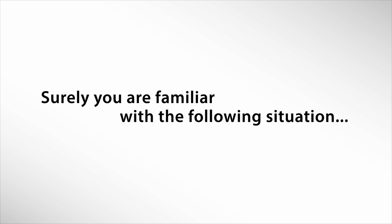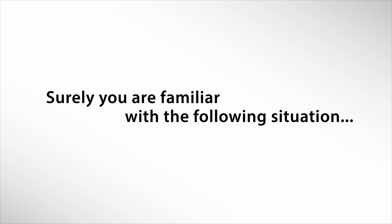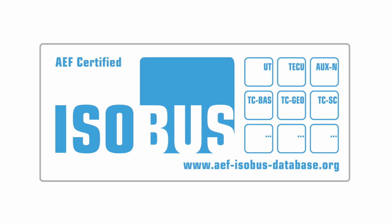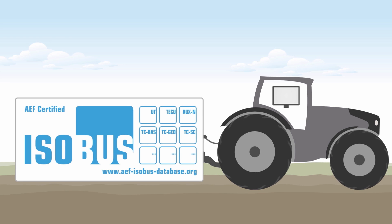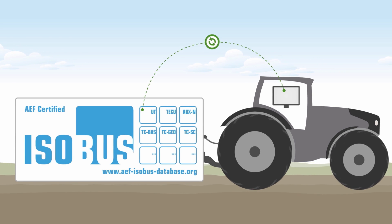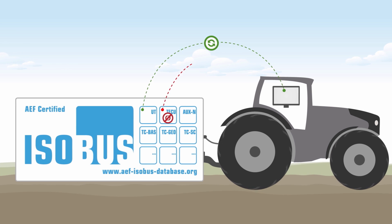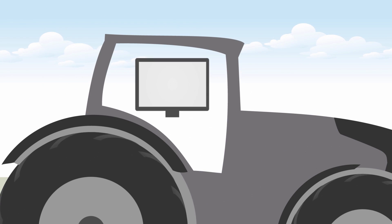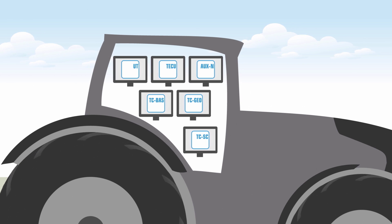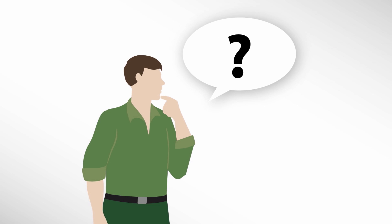Surely you are familiar with the following situation: ISOBUS is not always ISOBUS. ISOBUS functionalities are continually increasing and implements can do more and more. However, if a terminal cannot read all the standards, the implement does not work properly. Or you need to use a dedicated terminal for each implement. What to do?